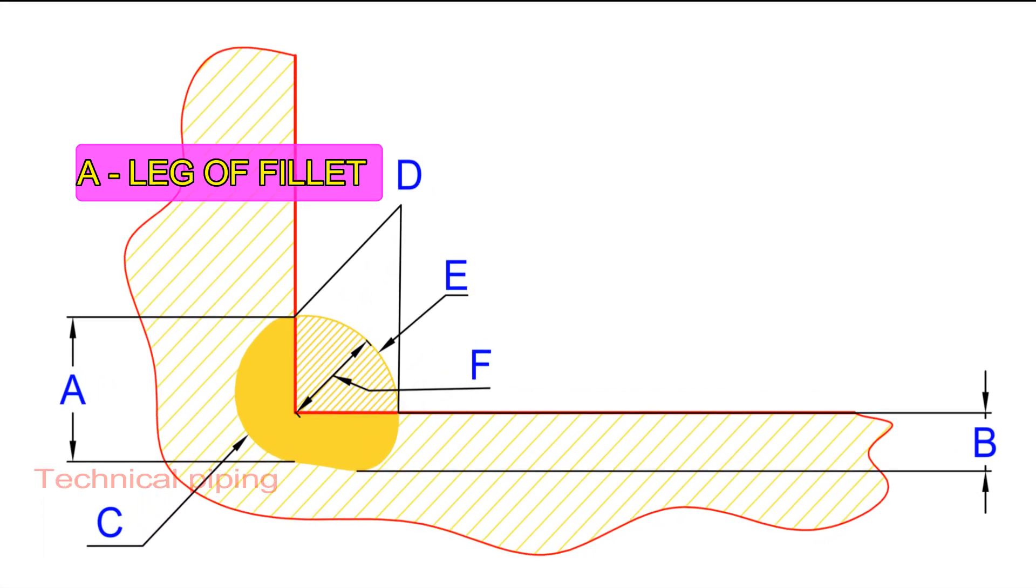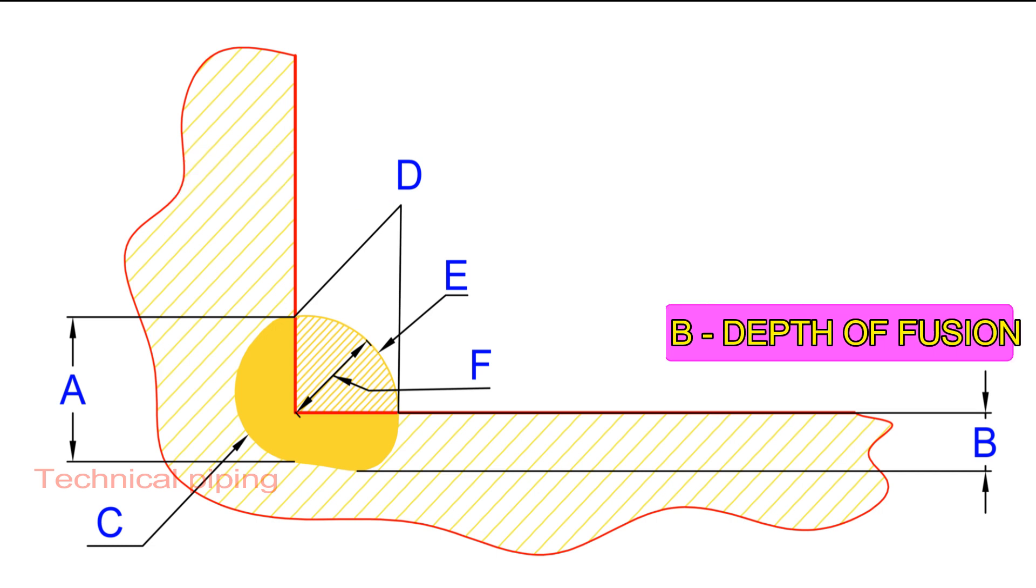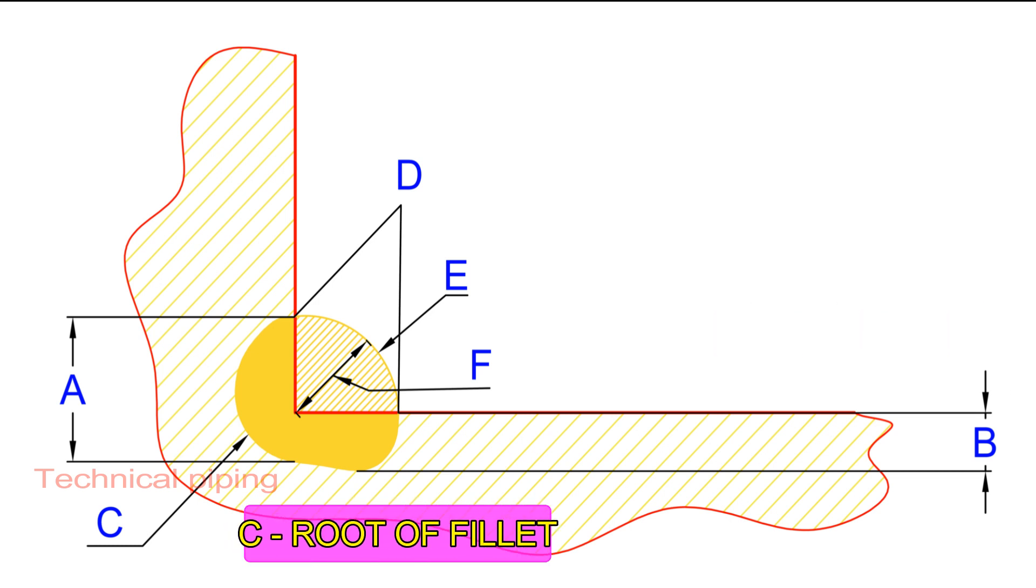Letter A denotes leg of fillet. Letter B denotes depth of fusion. Letter C denotes root of fillet.